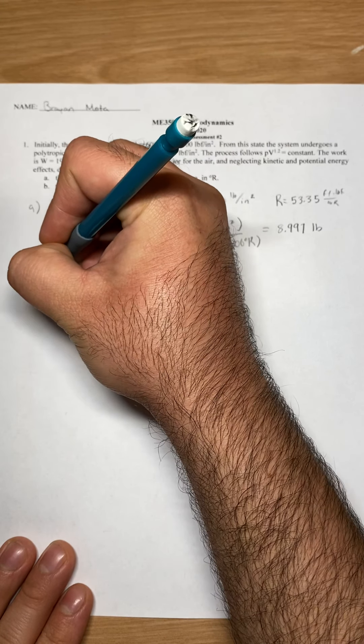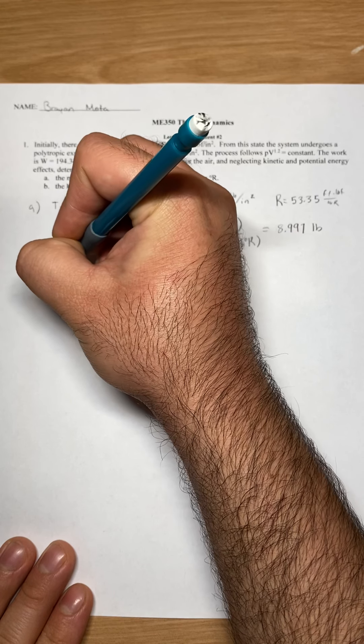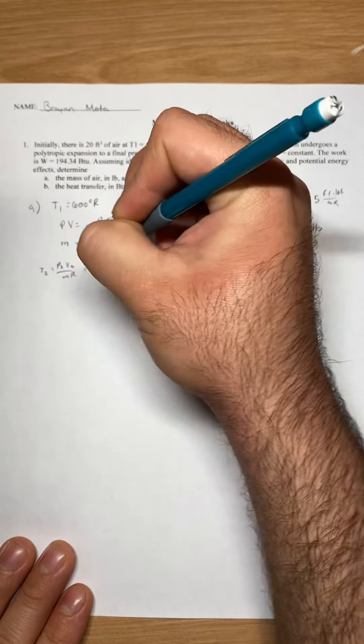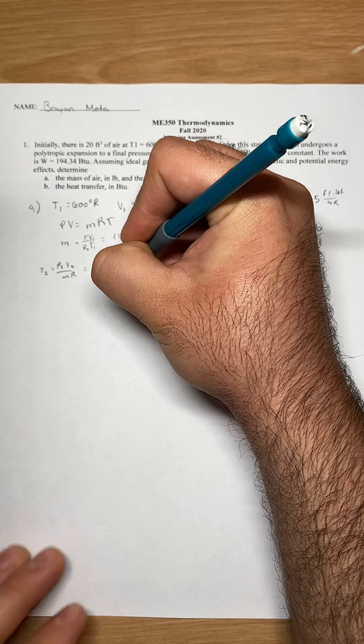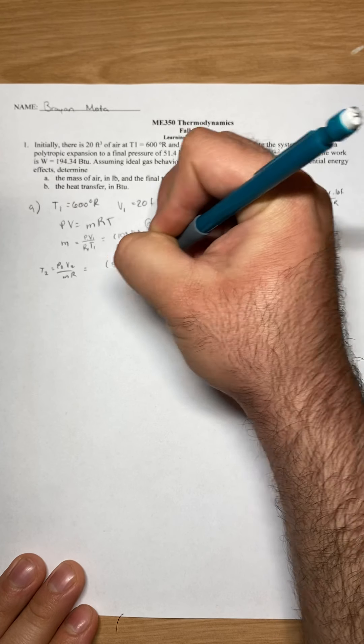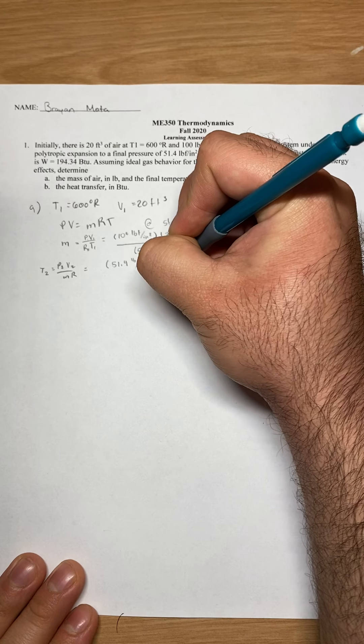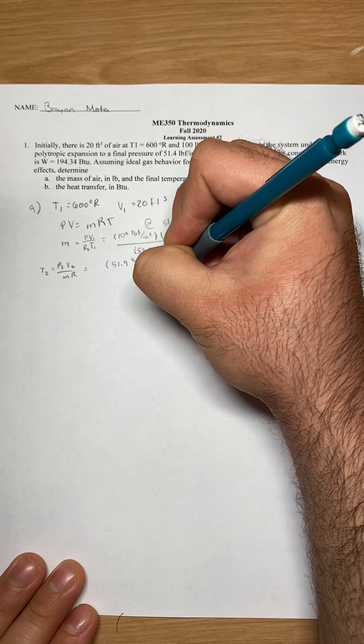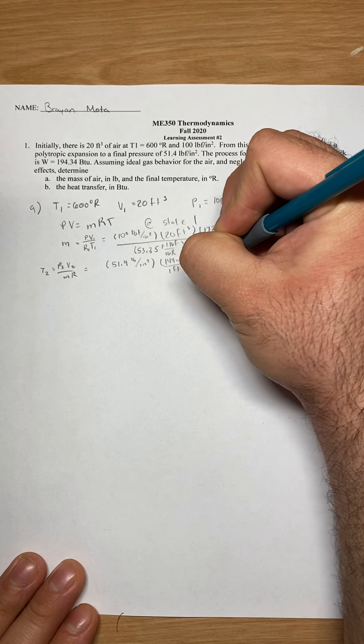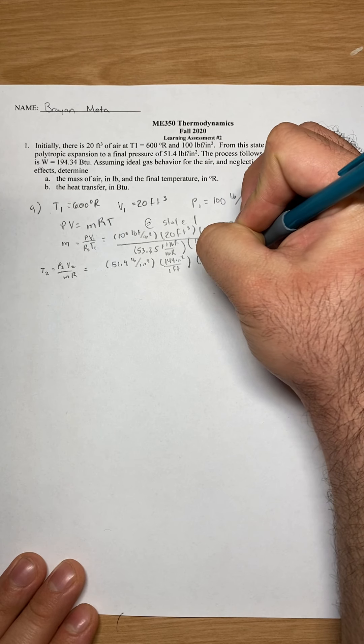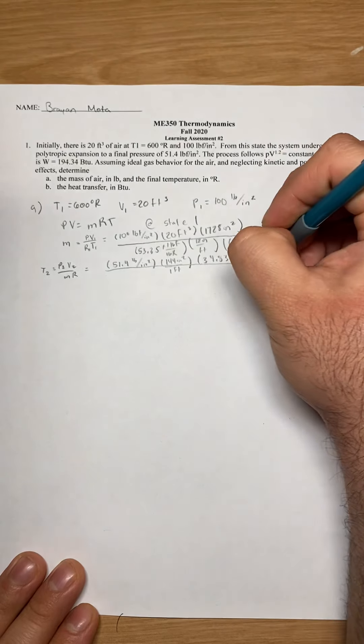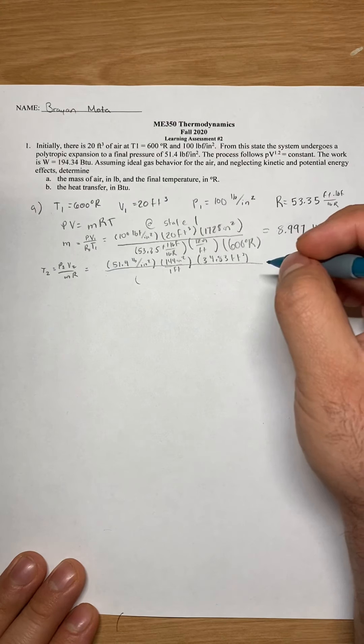So T2 equals P2 times V2 over MR. We plug in our values. So 51.4 pound per inch squared, 144 inch squared over 1 feet, converting, 34.3 feet cubed for our volume.